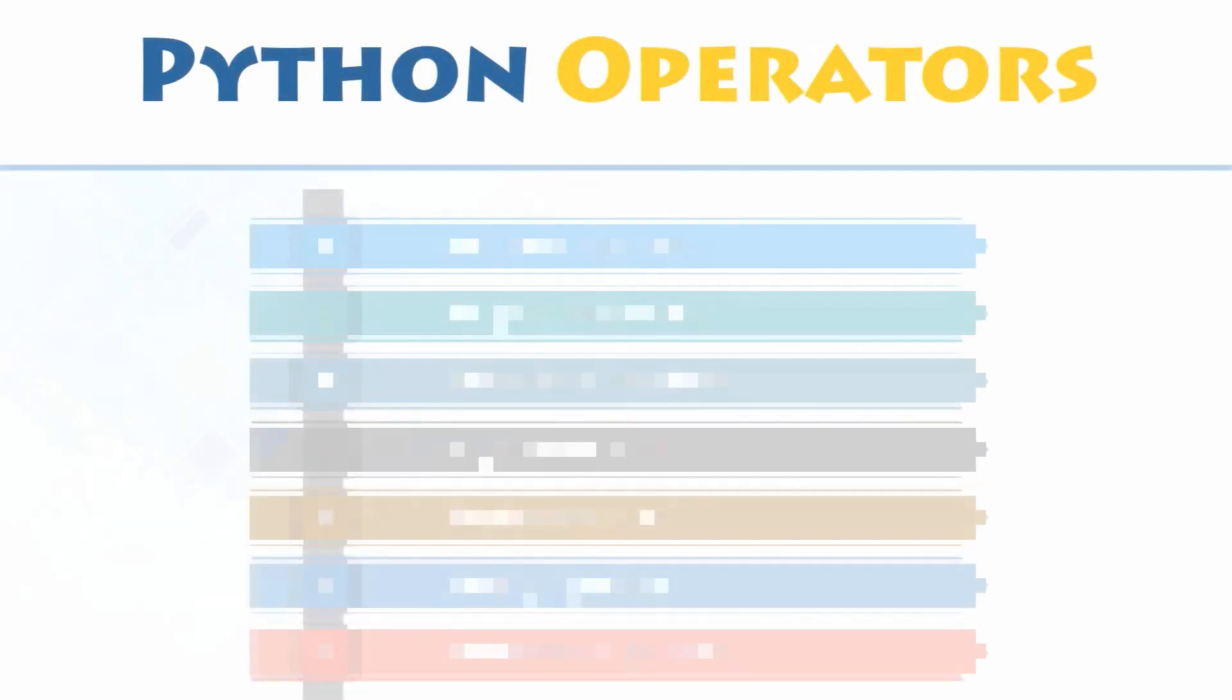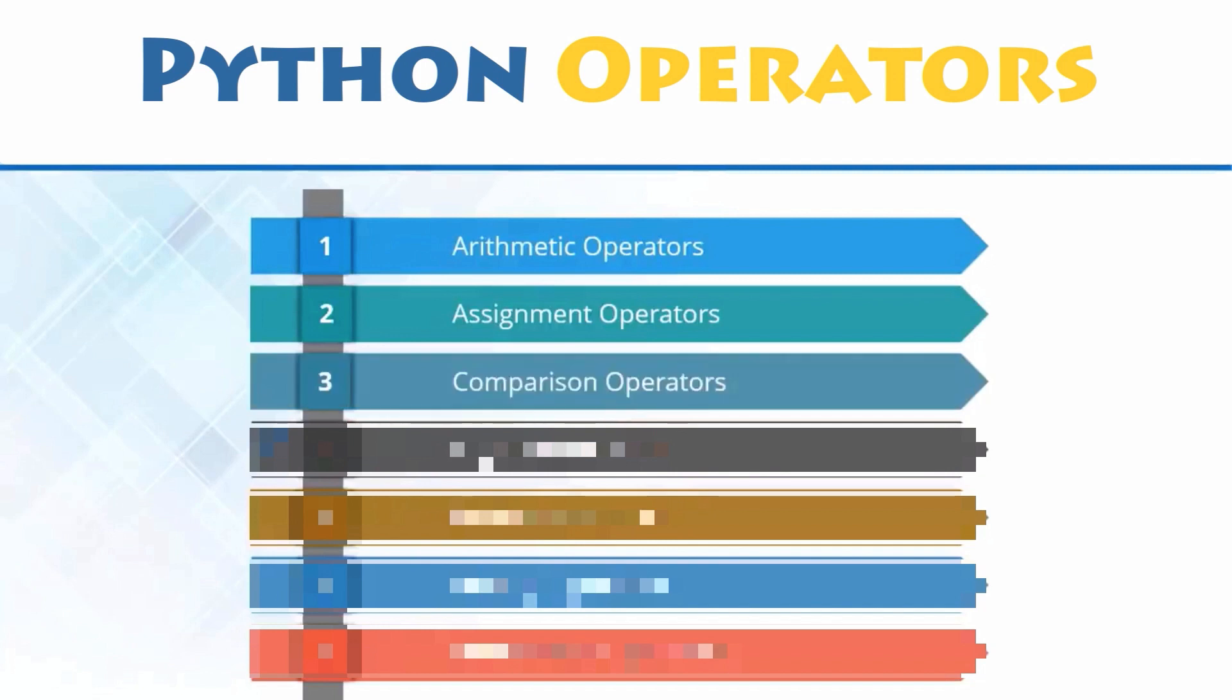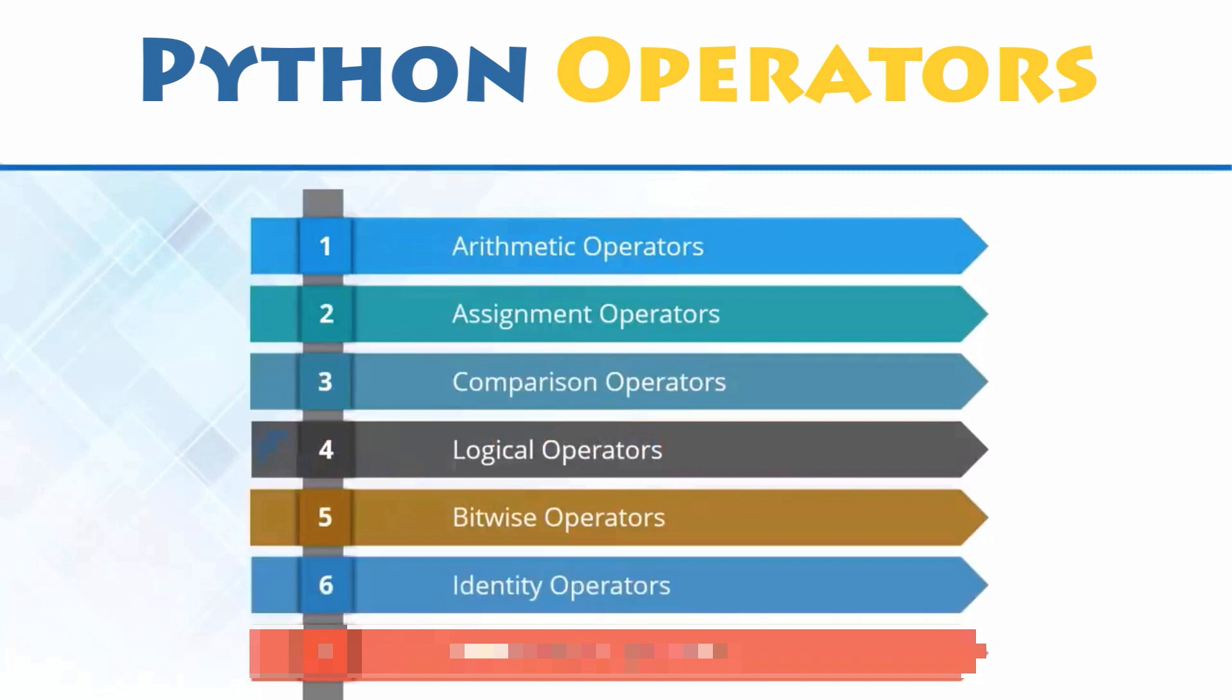Types of operators. Depending upon the type of operations you want to perform, there are seven types of operators in Python: arithmetic operators, assignment operators, comparison operators, logical operators, bitwise operators, identity operators, and membership operators.